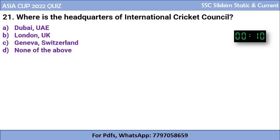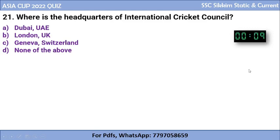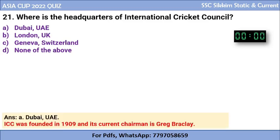Question 21 (last question): Where is the headquarters of the International Cricket Council, ICC? The options are Dubai, London, or Geneva. The correct answer is Dubai, which is in UAE. The ICC was founded in 1909 and its current chairman is Greg Barclay.